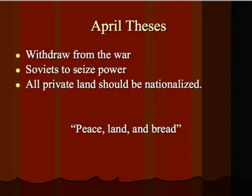Lenin and his fellow Bolsheviks put together what's known as the April Theses, which was a plan presented to the Russian people stating that if they were put into power, they were going to withdraw Russia from the war. They wanted the Soviets — those worker councils — to seize power and be in charge of the government. They also promoted the idea that all private land should be nationalized, which basically means they would take all land currently owned by individuals and put it under the control of the government.